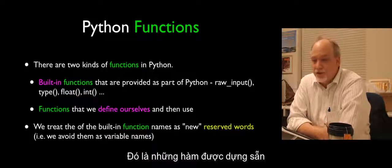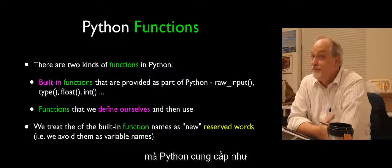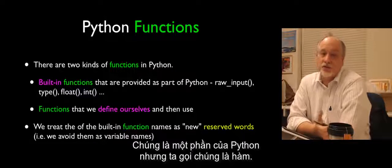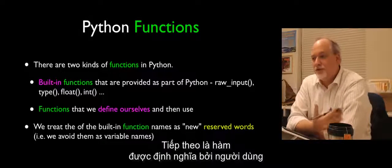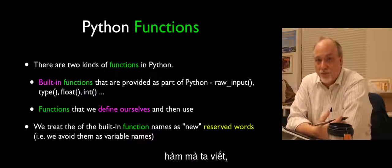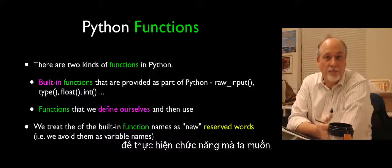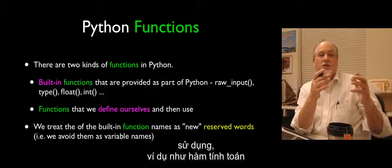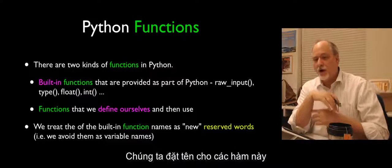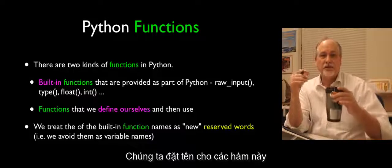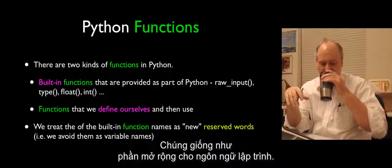And that is, there are built-in functions that Python provides to us, like float, raw input, int, those kinds of functions. Those are just part of Python. But we call them as functions. The difference is we don't write them. And then there's user-defined functions, functions that we write, functions that create functionality that we want to make use of, like encapsulating the ability to compute pay for time and a half for overtime. And so, we name these things and we treat them as new reserved words that we've created. They're kind of an extension to the language, as it were.